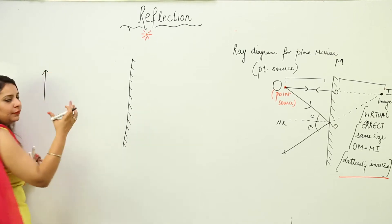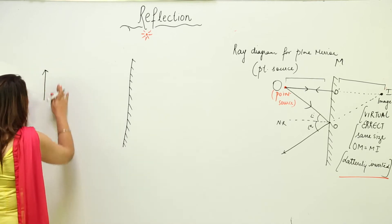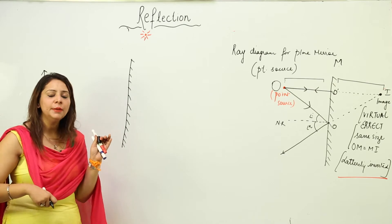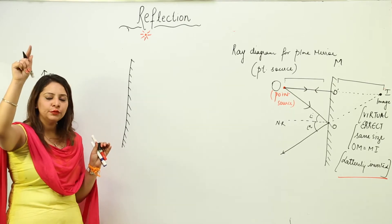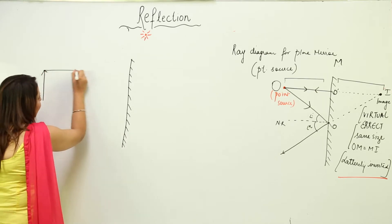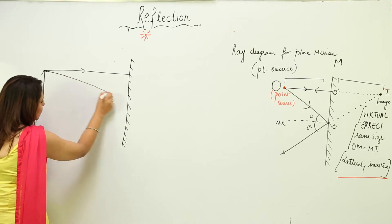So now as you can see, this complete source is emitting light, but whenever we are making a ray diagram, we'll consider two points - the upper point and the lower one. So we'll just take the rays from this point. Let's say this is one ray falling perpendicular, this is one ray falling at a certain angle, and it gets reflected in the same way.